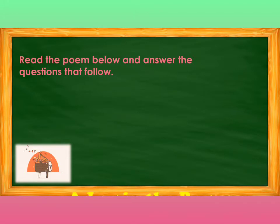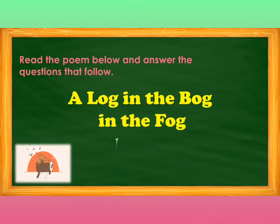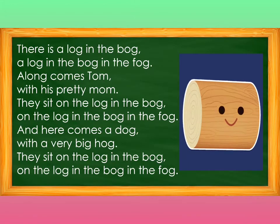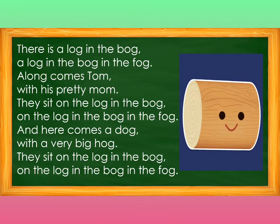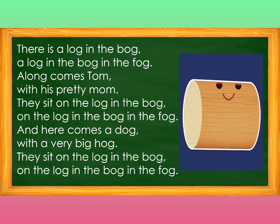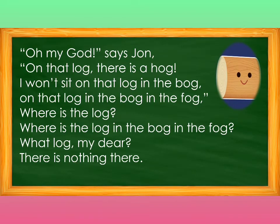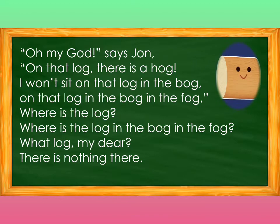Well done! Read the poem below and answer the questions that follow. 'A Log in the Bog in the Fog' by Anne Hermosa. There is a log in the bog, a log in the bog in the fog. Along comes Tom with his pretty mom. They sit on the log in the bog. And here comes a dog with a very big hog. They sit on the log in the bog in the fog. Oh my god, says John, on that log there is a hog — I won't sit on that log in the bog in the fog. Where is the log? Where is the log in the bog in the fog? What log, my dear? There is nothing there.